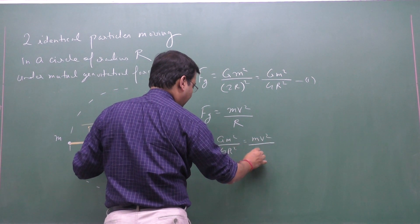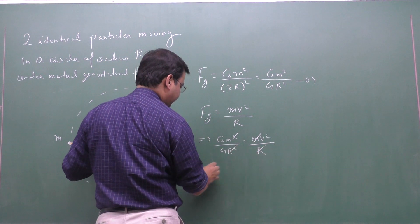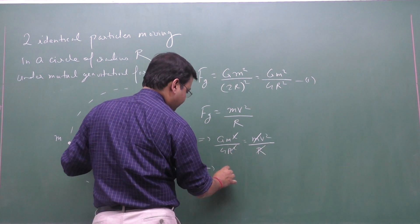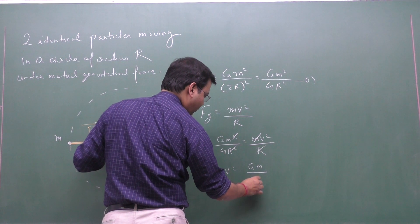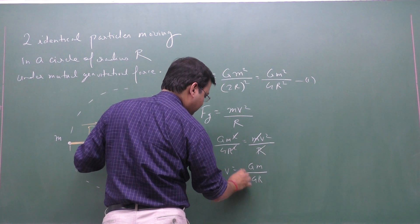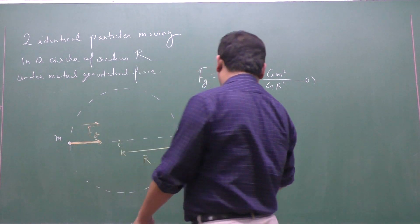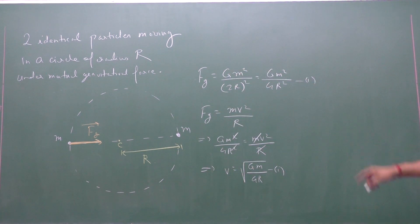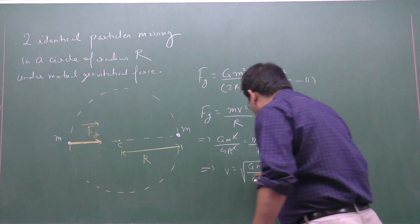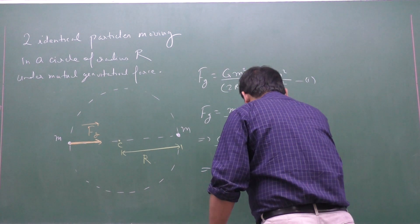After cancelling m and R, we get V = √(GM/4R). So both particles are moving with the same speed, which is the square root of GM/4R.